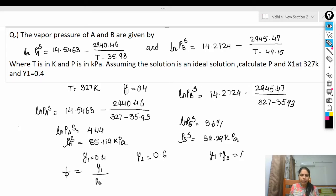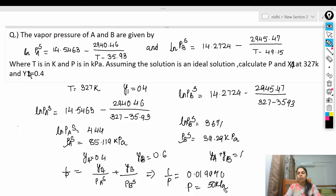Total pressure using the equation: just substitute all the values. P_B^s we know is 39.29, and the values of Y_A and Y_B are 0.4 and 0.6. When you solve all these things you will get the value of 1/P = 0.019970, so P will be equal to 50 kilopascal.